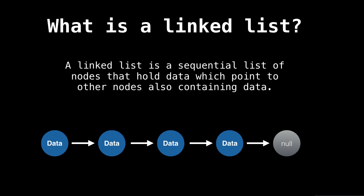So what is a linked list? A linked list is a sequential list of nodes that hold data which point to other nodes also containing data. Below is an example of a singly linked list containing some arbitrary data. Notice that every node has a pointer to the next node. Also notice that the last node points to null, meaning that there are no more nodes at this point. The last node always has a null reference to the next node. For simplicity, I will omit this in the following slides.